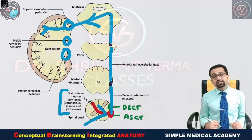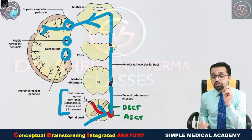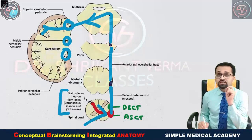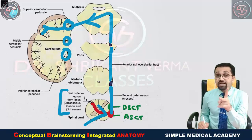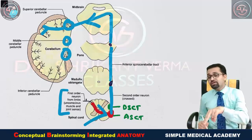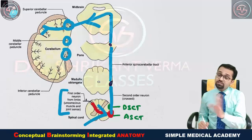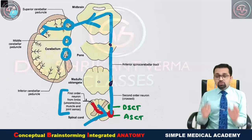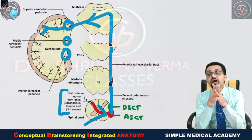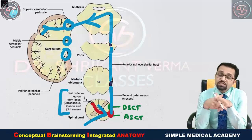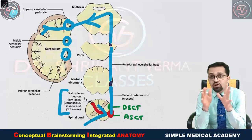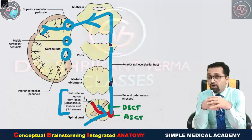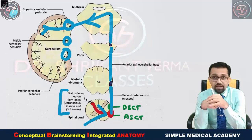The ventral spinocerebellar tract is an example of a crossed tract — it crosses twice — but ultimately enters the cerebellum on the same side. Its function is to carry unconscious kinesthetic sensations. This completes the discussion of the spinocerebellar tracts.